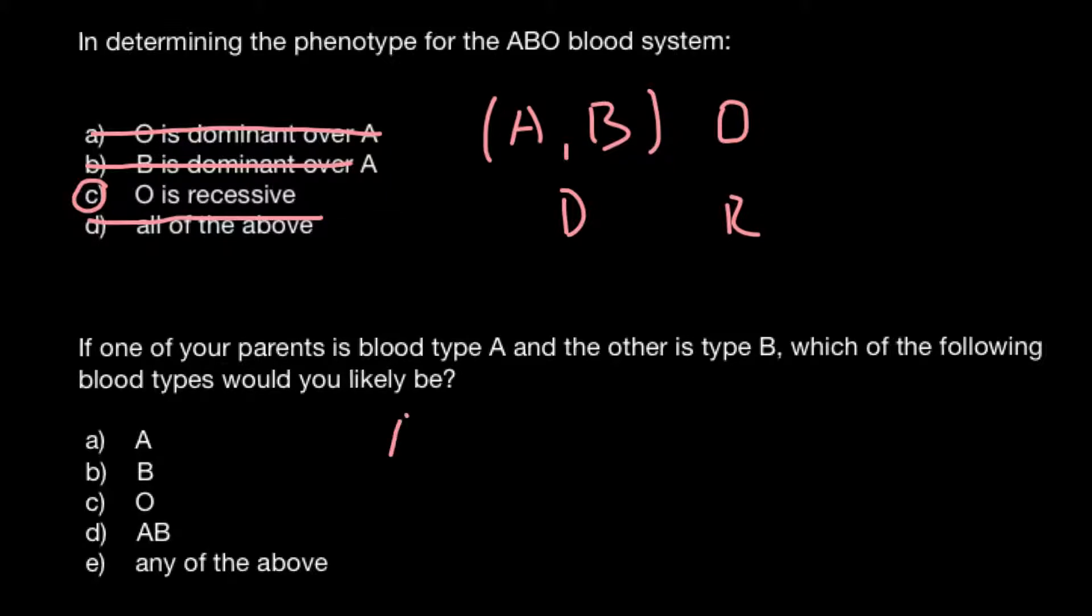People who belong to blood group A - this is phenotype A - can be of two genotypes. One would be AA, another one would be AO, because people are diploid and we have two alleles for each variant of phenotype.